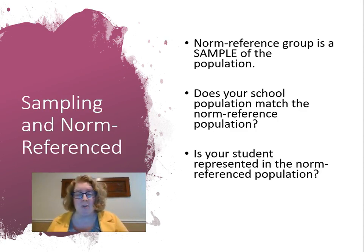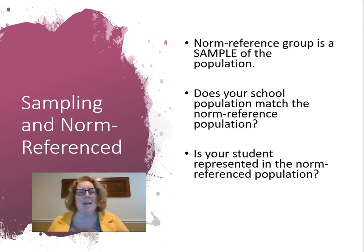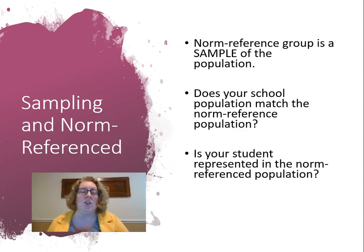You also want to think about whether your student is included in that norm reference population — things like race and ethnicity, gender, disability status, and particularly the specific disability the student has. ADHD and autism are common and probably included, but if your student has a rare disability, make sure it was represented. Same with students who speak languages other than English. If the language is uncommon, they might not be included, and that means the inferences you can make about how your student fits in with that norming population might be more tenuous.